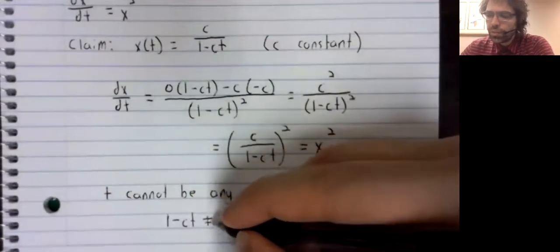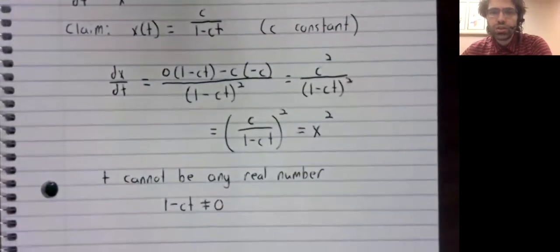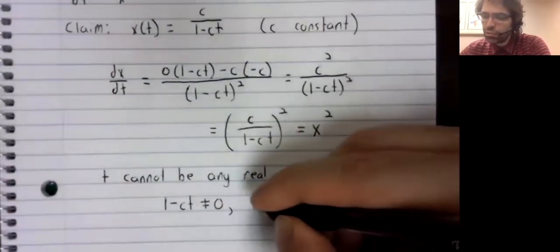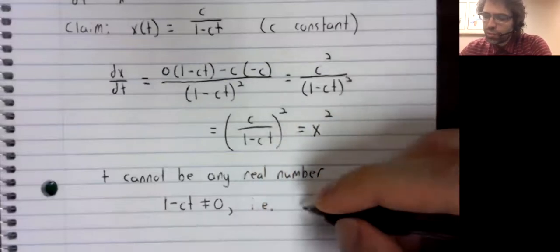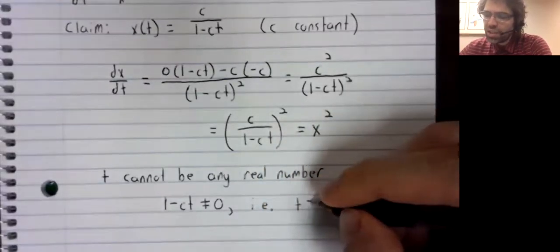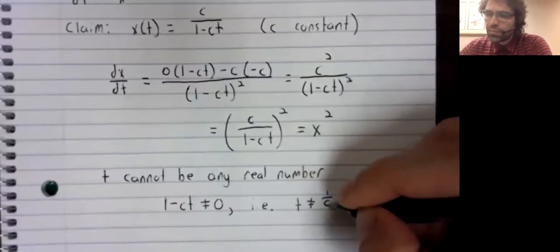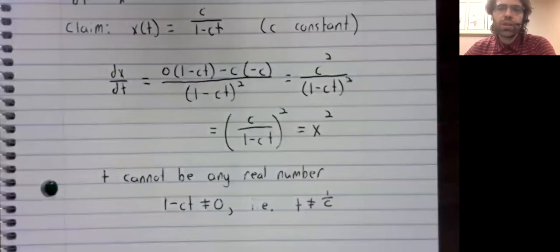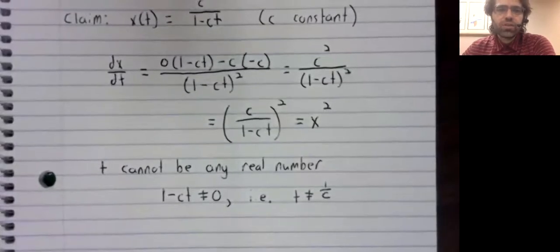So we need this denominator not to be zero, from which we conclude that t cannot be one divided by c. So what, if anything, does that mean?